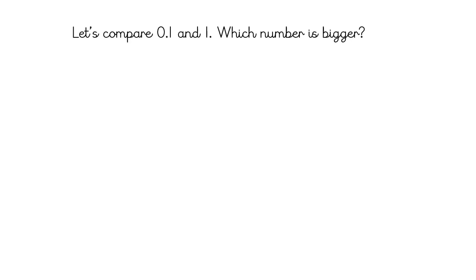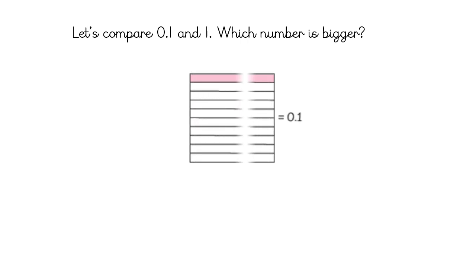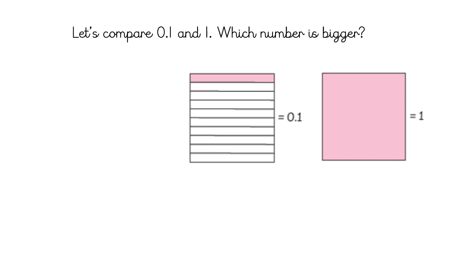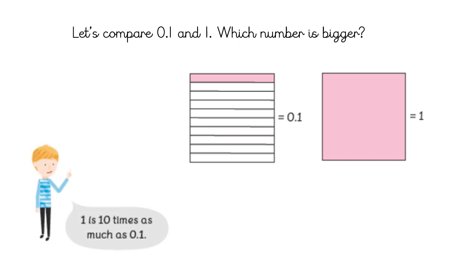Let's compare these two numbers: 0.1 and 1. Which number is bigger? Here is 0.1 and here is 1. We can clearly see that 1, the whole, is the greater number. 1 is 10 times as much as 0.1.